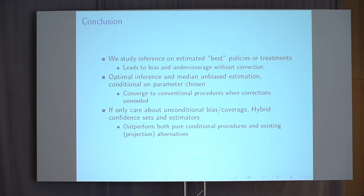To wrap up: in this project we study inference on estimated best policies or treatments, where the message is that picking the thing you think does the best can lead to bias or undercoverage if you don't correct for it. To fix this, we develop optimal inference and median-unbiased estimators conditional on the parameter chosen, where these procedures converge to the conventional ones in the case where corrections are unneeded — so when there's an obvious best treatment, we're not paying a price. And if we only care about unconditional bias or coverage, we also propose hybrid confidence sets and estimators, which we find outperform conditional procedures and the existing alternative, namely projection. Thank you all very much and happy to take any further questions.